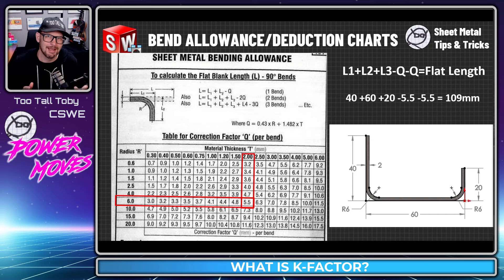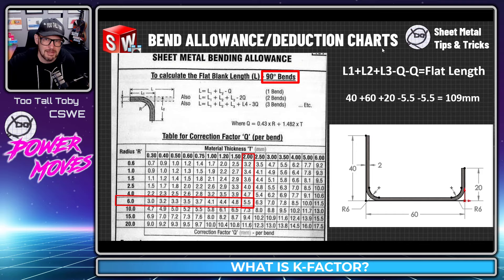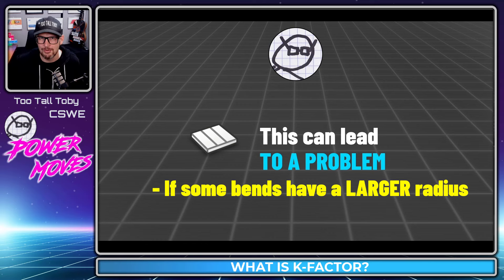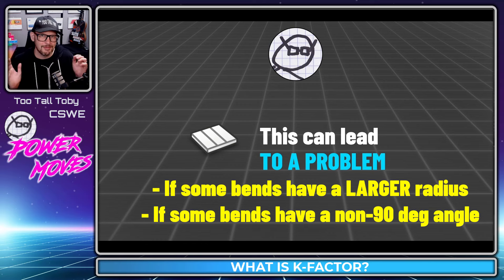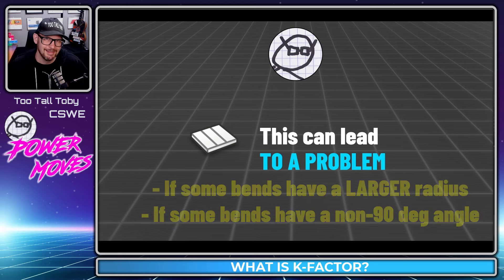That's what we're going to cut the material to. This works really well when all the bends are the same radius and the same angle — 90 degrees. But it can lead to a problem if the radius is not uniform or if the angle is not 90 degrees. And this is where K-Factor can really help us out in sheet metal.